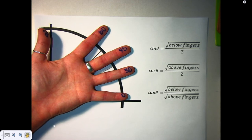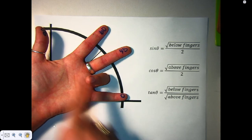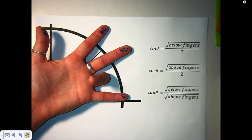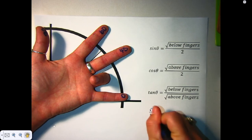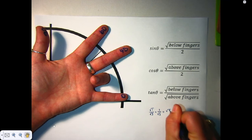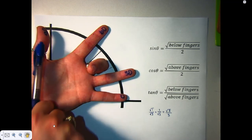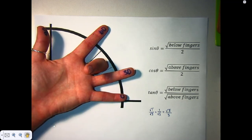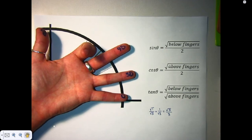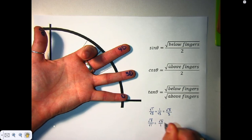Tangent is below fingers divided by above fingers, so tangent of 30 is square root of 1 divided by square root of 3. But when you do square root of 1 divided by square root of 3, that's 1 over square root of 3. And we rationalize the denominator to get square root of 3 over 3. Tangent of 45 is square root of 2 divided by square root of 2. Well, that's 1. And then tangent of 60 is square root of 3 divided by square root of 1, which is square root of 3 divided by 1, or just square root of 3.